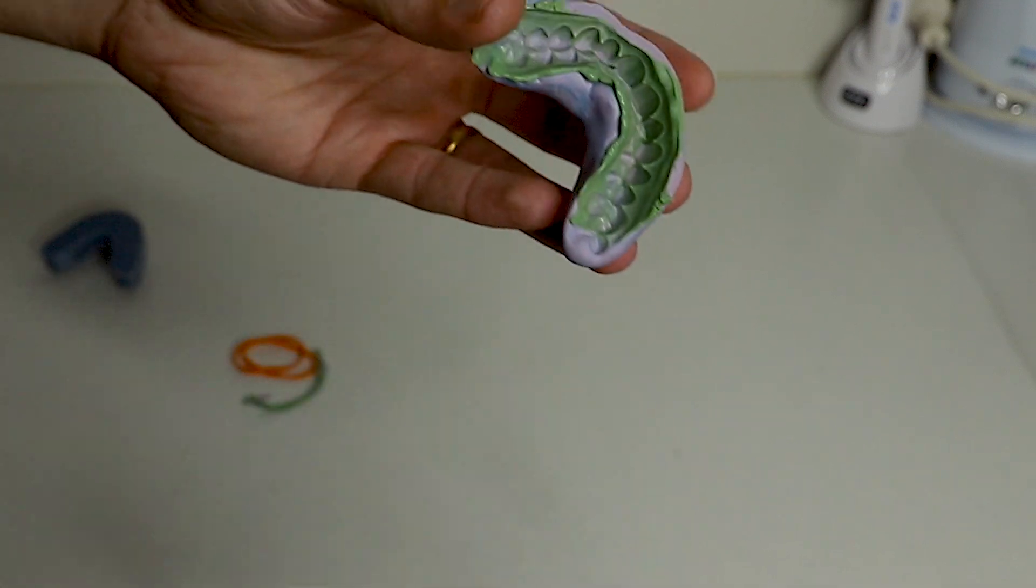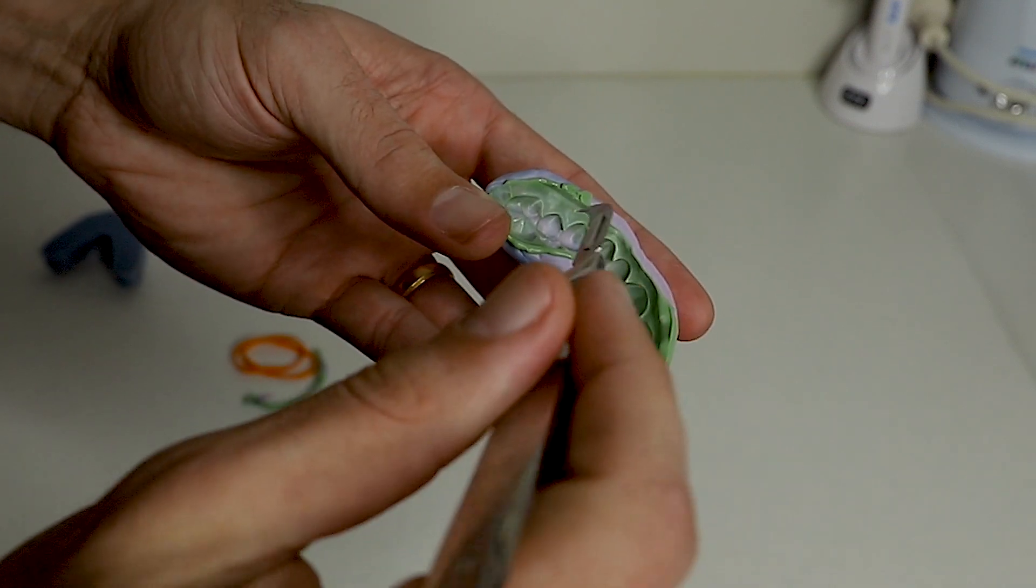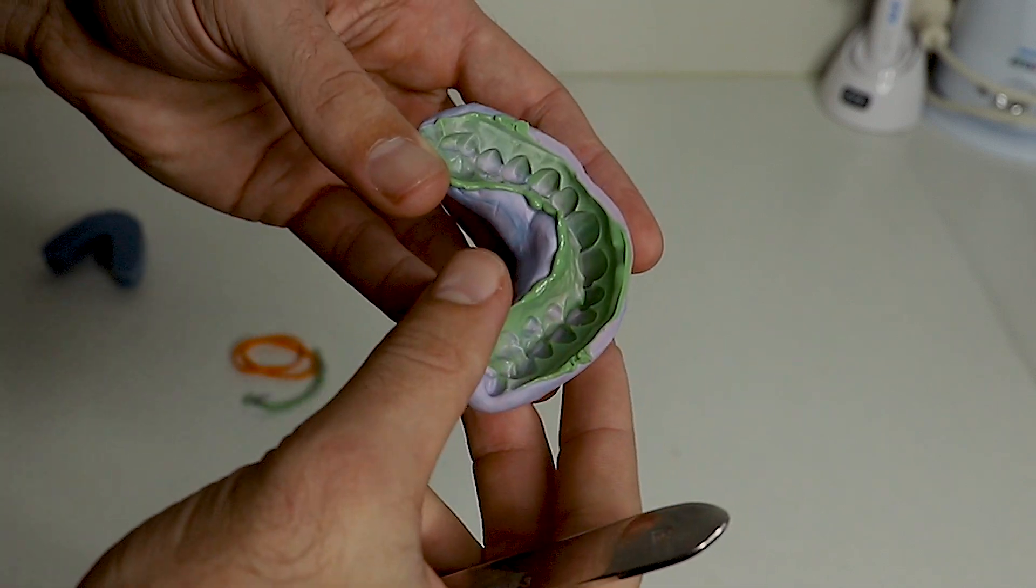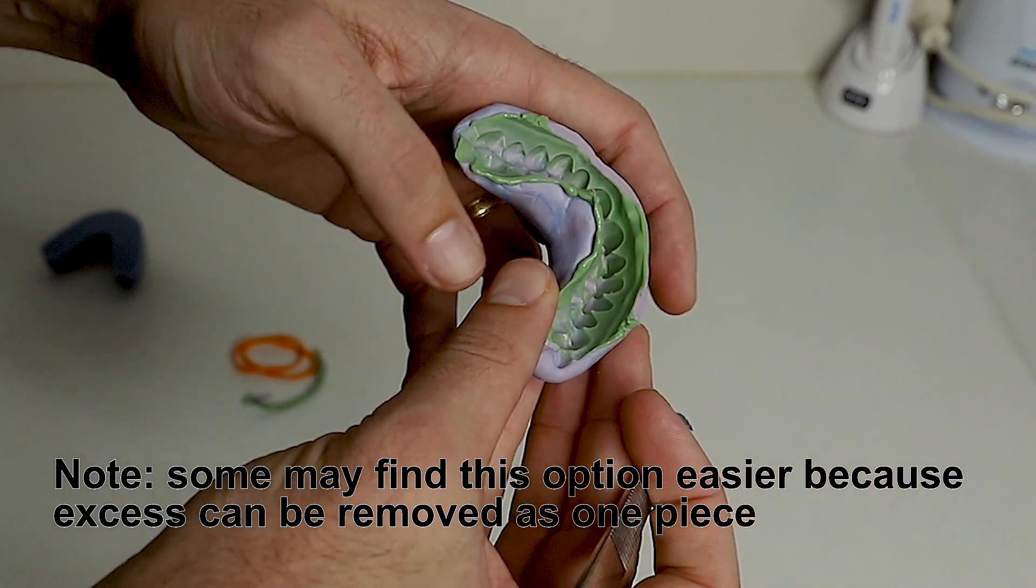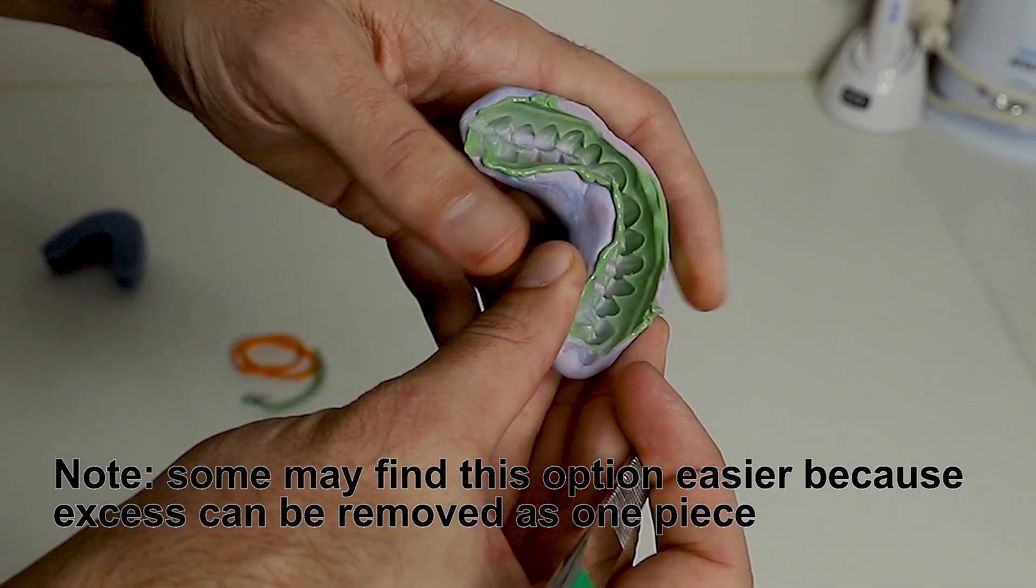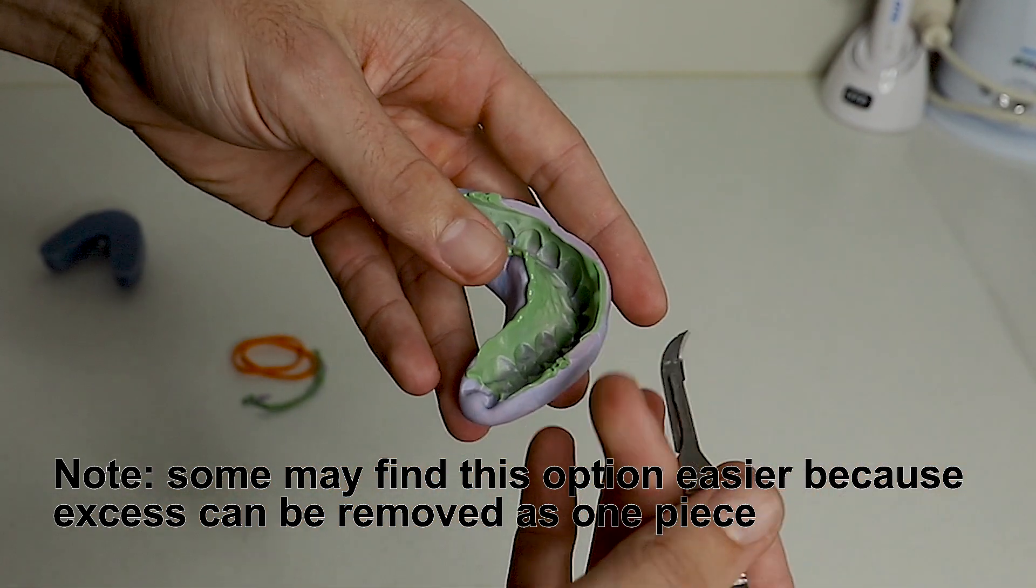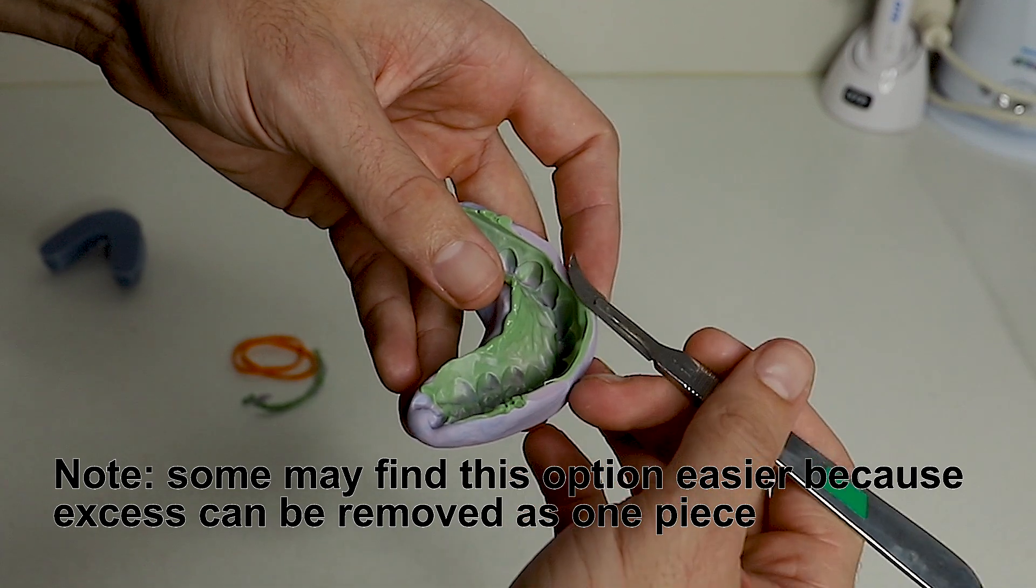You can see here that we have some excess material above the gingiva. Now you have two options. The first option is to leave it like this. When you put your temporary material inside of here and you put it over the top of the teeth, you won't be able to remove the excess as easily. So you end up having to squeeze around here so the excess squirts out over the top and it's going to come out in this section here.